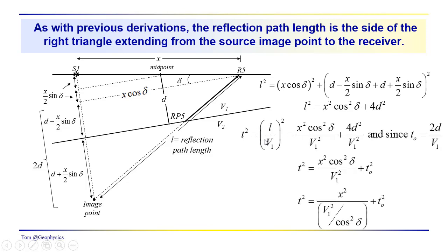From there, we want to get the travel time, still working in squared coordinates. T squared equals the length of this side of the triangle — the total reflection path length down to reflection point 5 and back to receiver 5 — divided by v1, squared. This gives t squared equal to x squared cosine squared delta over v1 squared plus 4d squared over v1 squared. Since t0 is the two-way time from the midpoint down to the reflector and back, and t0 squared equals 2d over v1 squared, we have t squared equals x squared cosine squared delta over v1 squared plus t0 squared.